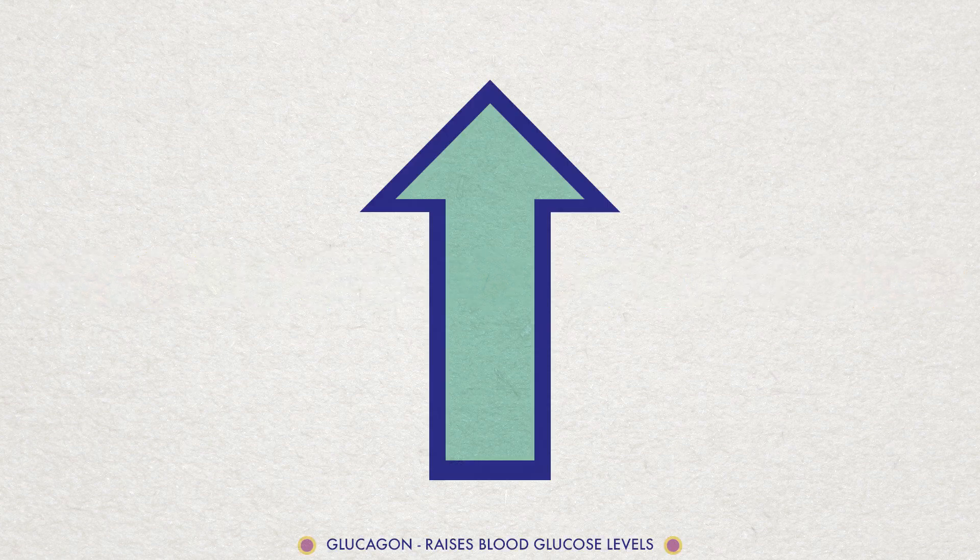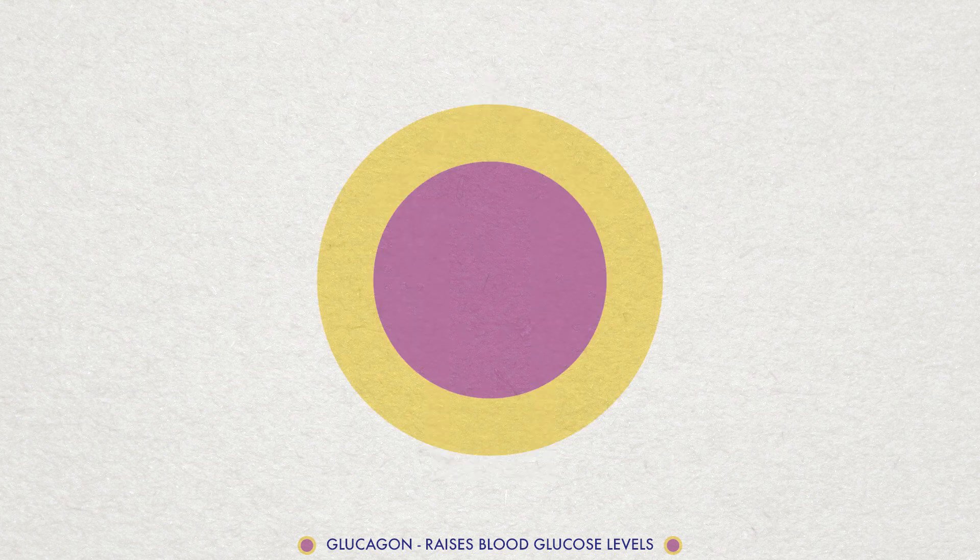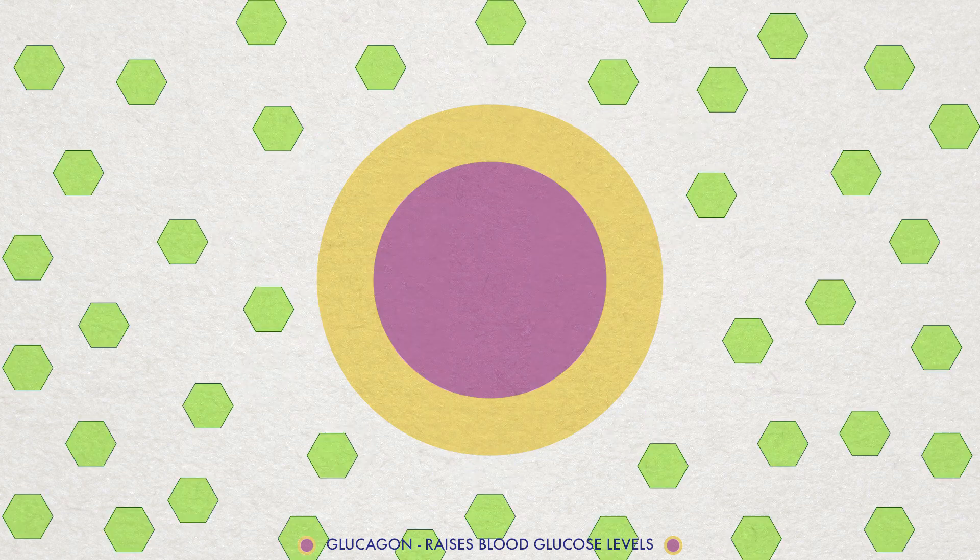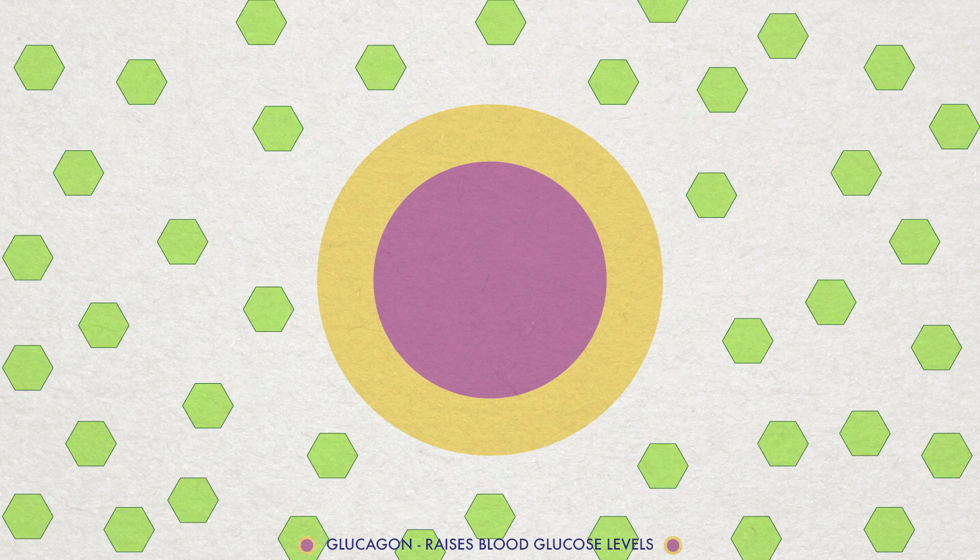Now, let's talk about glucagon. It is an amino acid peptide and has a pretty big effect on the body in raising blood glucose levels. Just one molecule of glucagon can cause the release of 100 million glucose molecules into the blood.